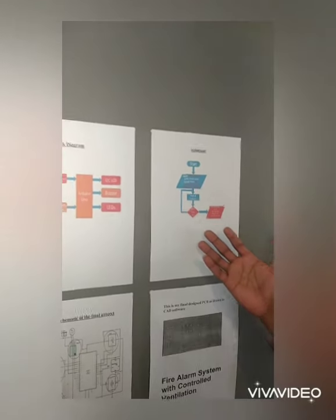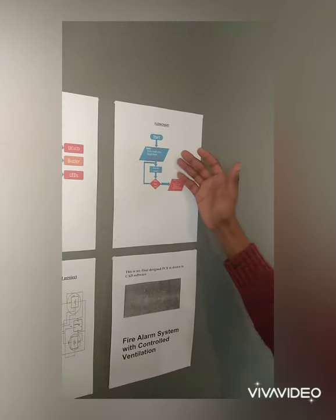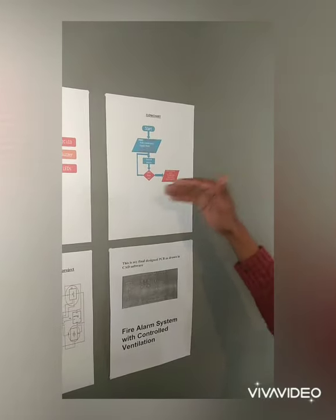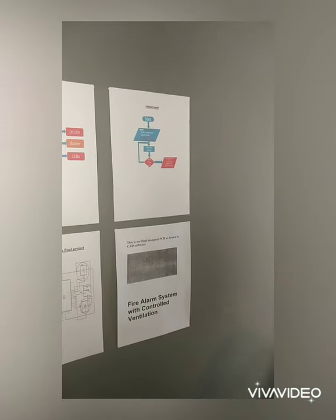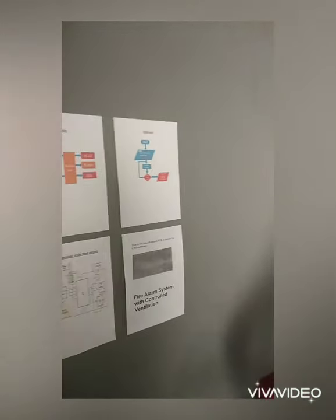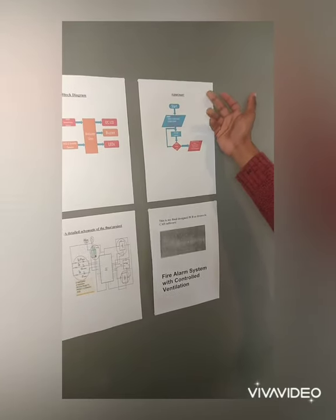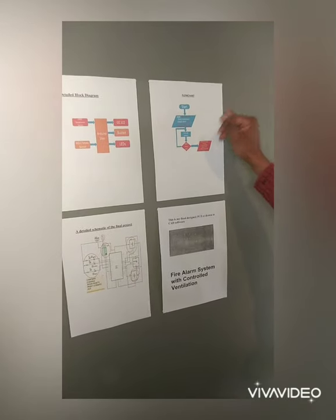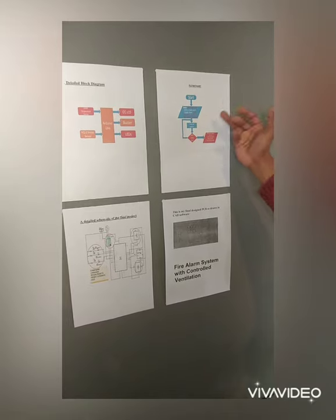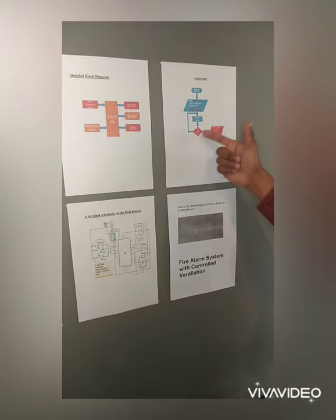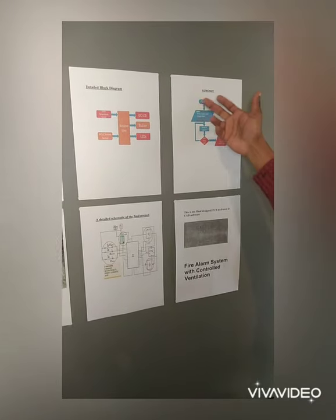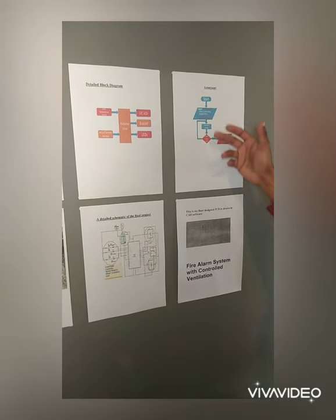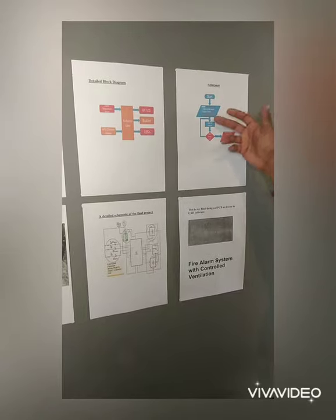The flowchart mainly shows how my design source code will change from system to system as the readings differ. The flowchart has five steps: starting with the start or initialization part, the input or output, the process, the decision, and the end or termination. Not forgetting the flowline, mainly showing the viewer how the code flows from one system to another.